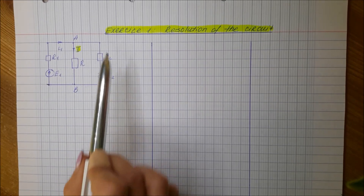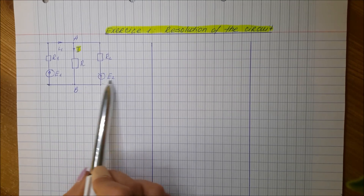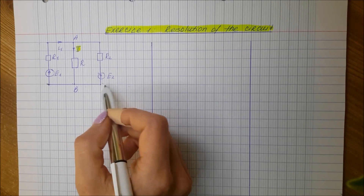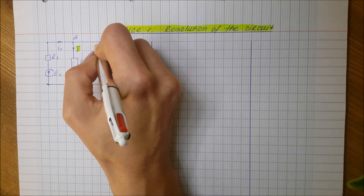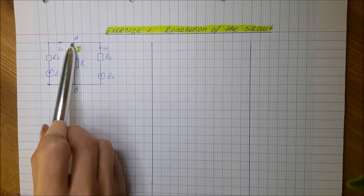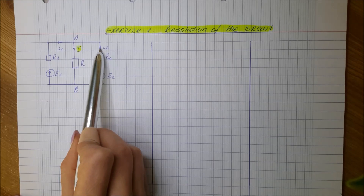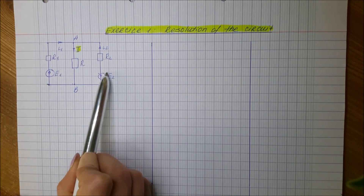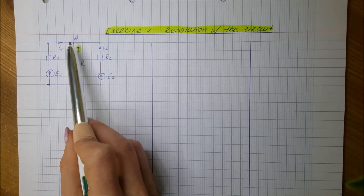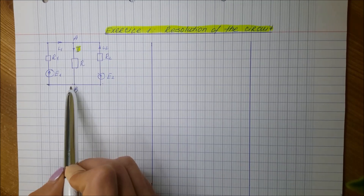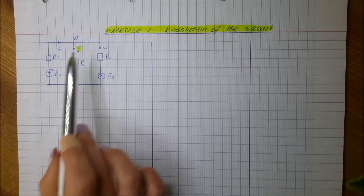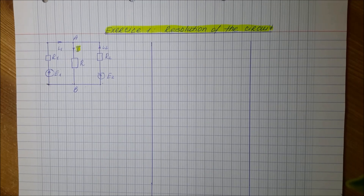We will do the same for another branch which contains generator E2. I will also apply the generator convention and choose the current arrow I2 going to node A. So current I2 and the generator voltage E2 have the same direction. In the third branch, the direction of the current is already predefined by the statement, so I will not change it. This completes the first step.